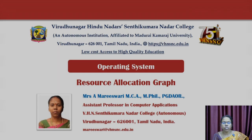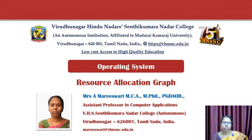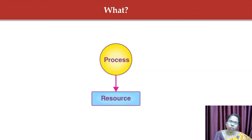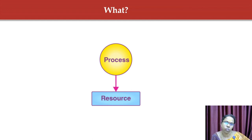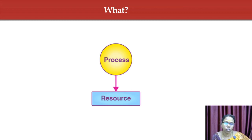Welcome to the operating system video playlist. Today's topic is resource allocation graph. So, what is a resource allocation graph? Deadlocks can be described more precisely by using this graph. It is a simple directed graph that describes how the processes are allocated to the resources.